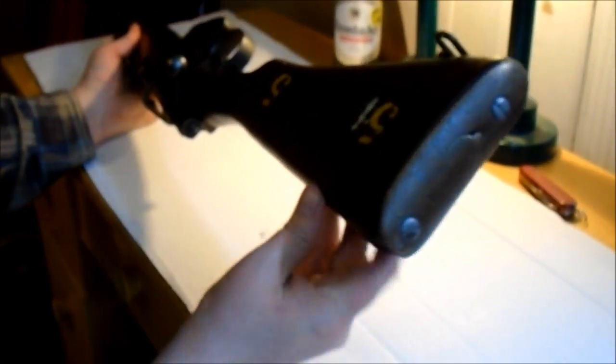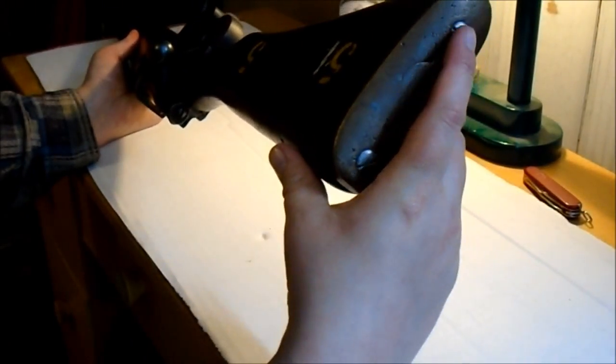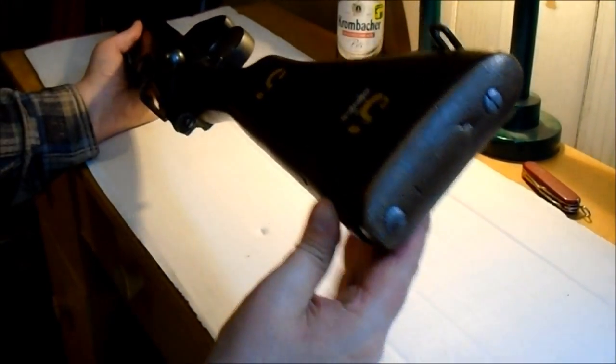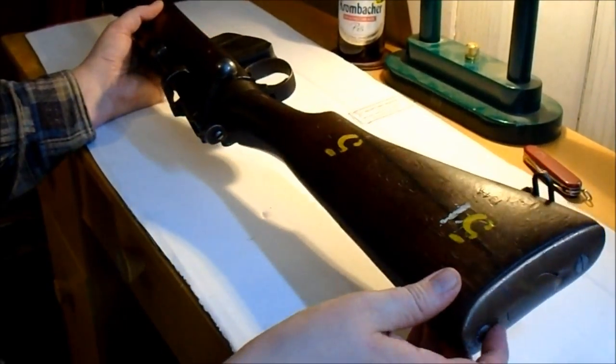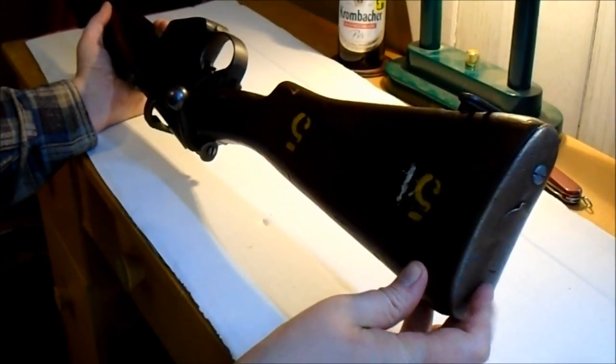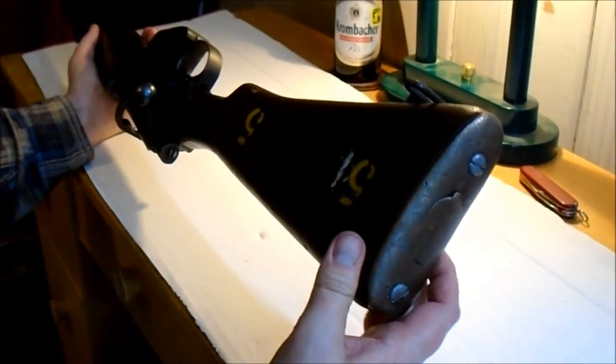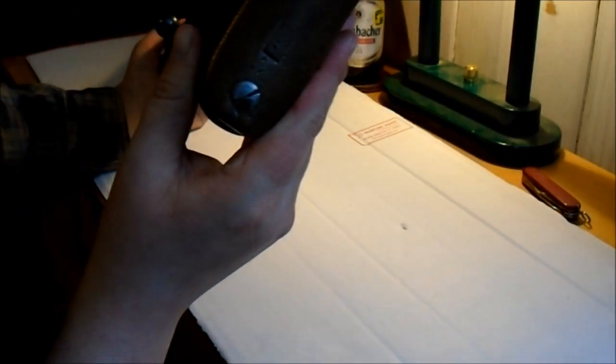As you can see, the screws on the butt-plate on these things, they're all beat flat. You can hardly even see them. There's no way you're getting that out of there, and you have to re-cut the screw slot so you can get a screwdriver into it.